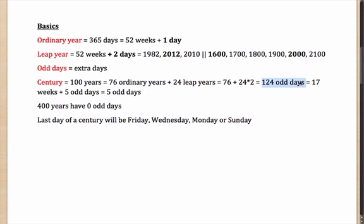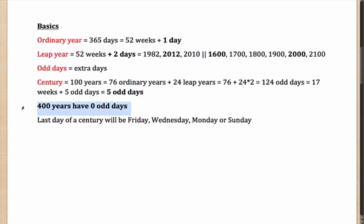124 odd days is a little too much over a week, so we divide by 7. 124 divided by 7 gives 17 weeks and 5 more odd days, which essentially means a century will have 5 odd days. Another very important point: 400 years in a cycle have 0 odd days.